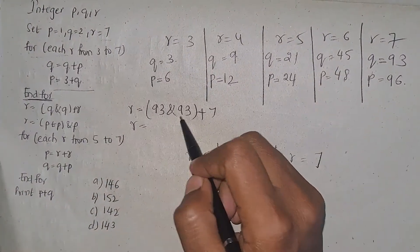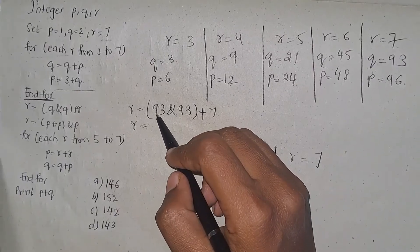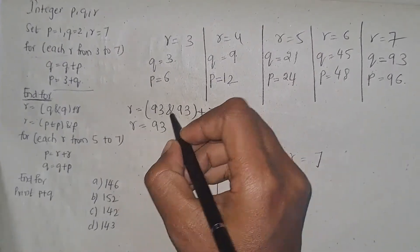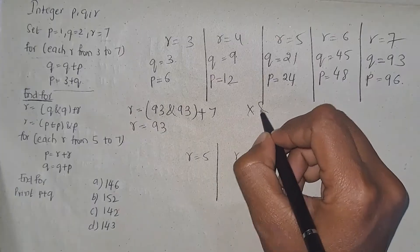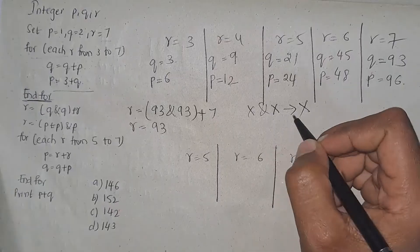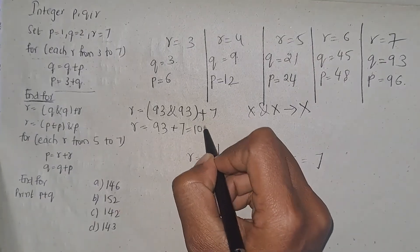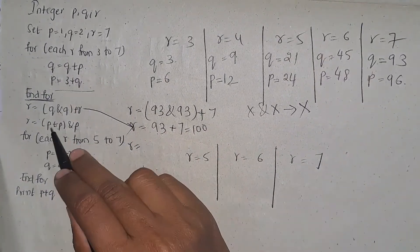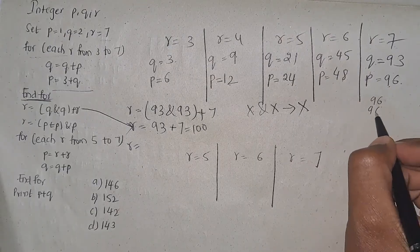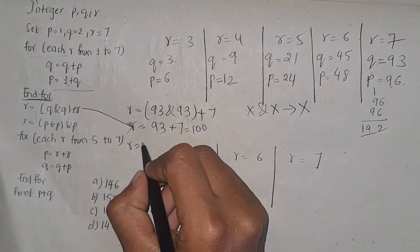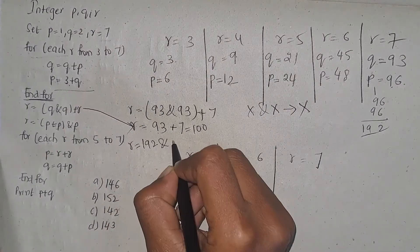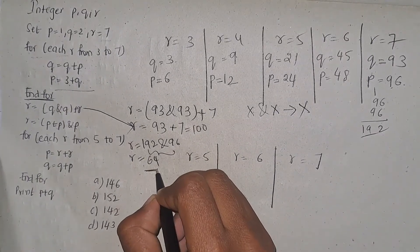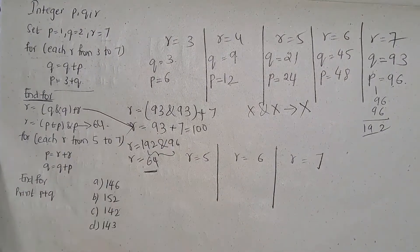When you perform bitwise AND between the same two numbers you get that number as the result. So 93 bitwise AND 93 equals 93, plus 7 equals 100. So r is 100. Then r equals p plus p: p is 96, so 96 plus 96 equals 192. Then 192 bitwise AND p which is 96 gives r equals 64.